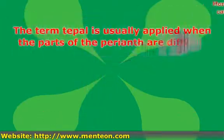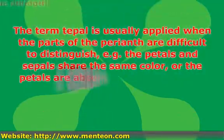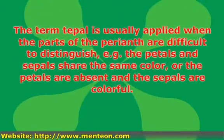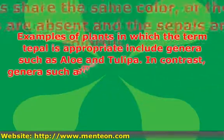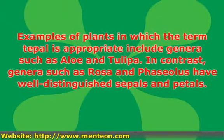The term 'tepal' is usually applied where the parts of the perianth are difficult to distinguish — for instance, where the petals and sepals share the same color, or where the petals are absent and the sepals are colorful. Examples of plants where tepals are appropriate include genera such as Rosa and Phaseolus, which have well-distinguished sepals and petals, in contrast to genera like Aloe and Tulip.